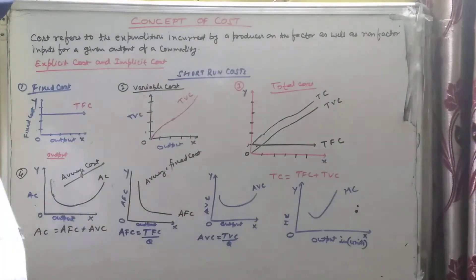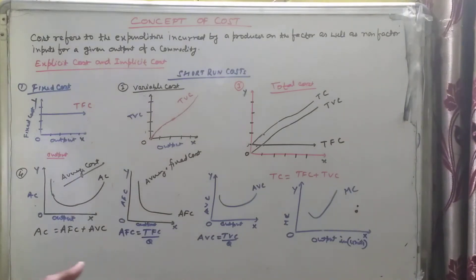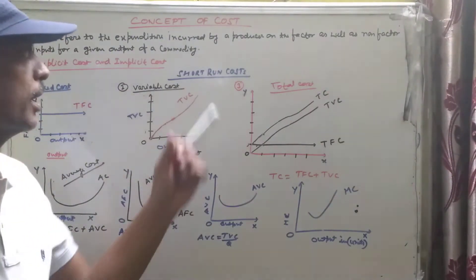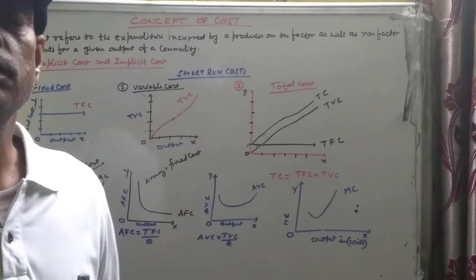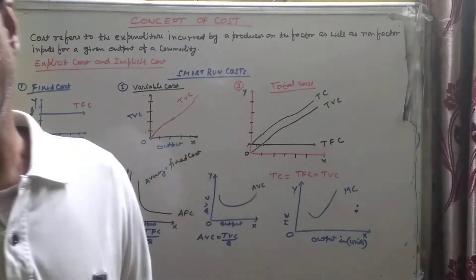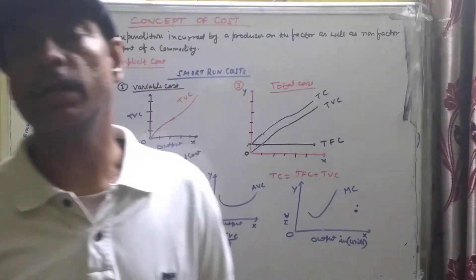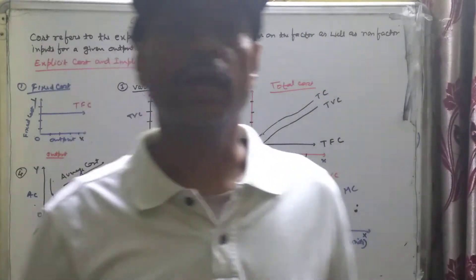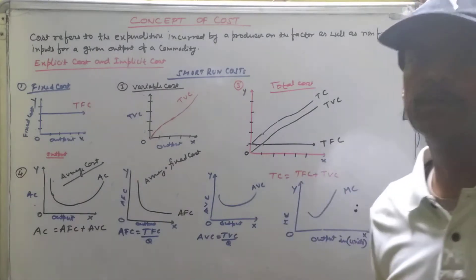Let us start the next chapter: concept of cost. Cost refers to the expenditure incurred by a producer on factor as well as non-factor inputs for a given output of a commodity. Whatever expenses are incurred by the producer on the various factors for an output is called the cost of production of that commodity.